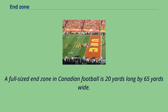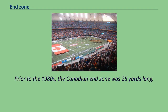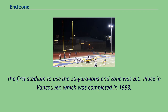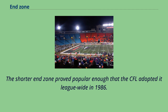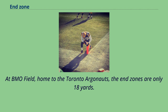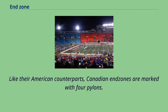A full-sized end zone in Canadian football is 20 yards long by 65 yards wide. Prior to the 1980s, the Canadian end zone was 25 yards long. The first stadium to use the 20-yard long end zone was BC Place in Vancouver, which was completed in 1983. The floor of BC Place was too short to accommodate a field 160 yards in length. The shorter end zone proved popular enough that the CFL adopted it league-wide in 1986. At BMO Field, home to the Toronto Argonauts, the end zones are only 18 yards. Like their American counterparts, Canadian end zones are marked with four pylons.